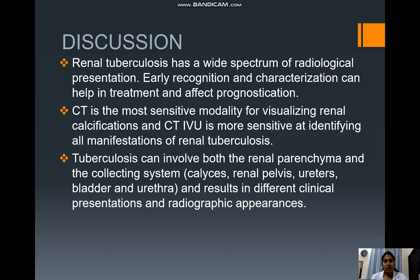Renal tuberculosis has a wide spectrum of radiological presentation. Early recognition and characterization can help in treatment and affect prognostication of disease. CT is the most sensitive modality for visualizing renal calcifications, and CT intravenous urogram is more sensitive at identifying all manifestations of renal tuberculosis. Tuberculosis can involve both the renal parenchyma and the collecting system — that is the calyces, renal pelvis, ureters, bladder, and urethra — resulting in different clinical presentations and radiographic appearances.